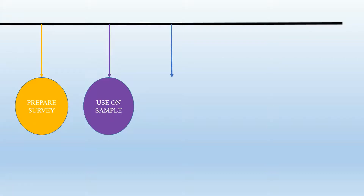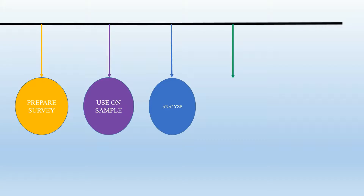The third step is that the researchers, after they get their responses, are going to analyze the data and work out the average willingness to pay or the average willingness to accept compensation. After that, they are going to apply that average to the population to work out the total — that just involves multiplying the average by the population of the entire area.